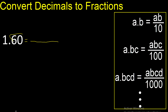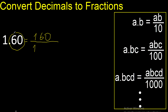First, all the numbers without point. Here, always number 1. After the point there are two numbers, therefore two zeros. Last, the last digit is 0, therefore eliminate, always with 0.